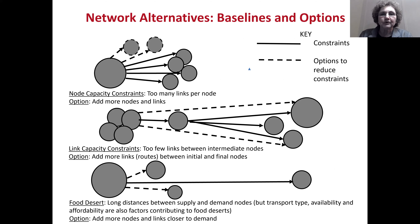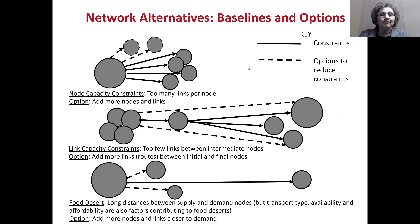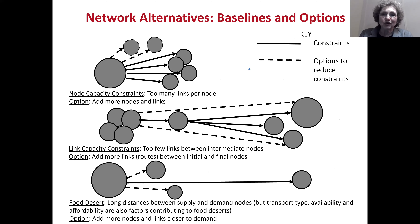Network principles are a very important way to understand what the system looks like. For example, sometimes there are node constraints — too many links per node. What you can do, as portrayed by the dotted lines, is add more nodes, or add more links, or both.